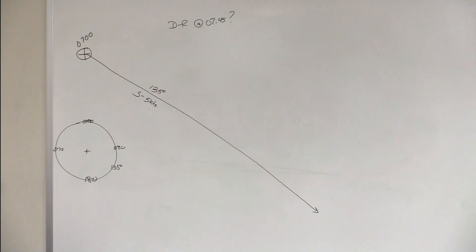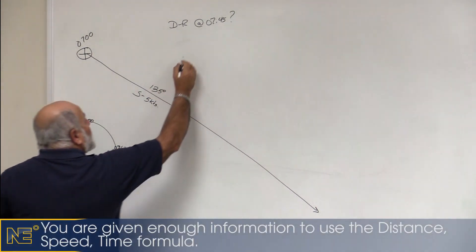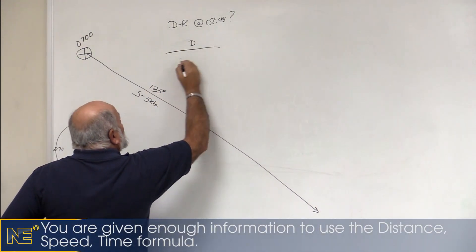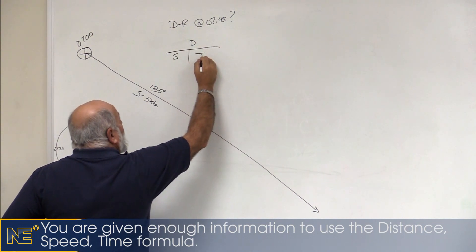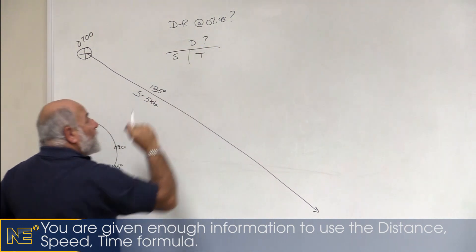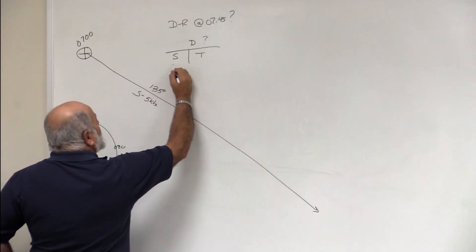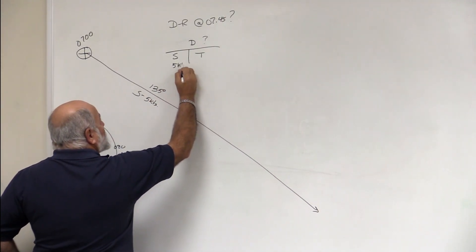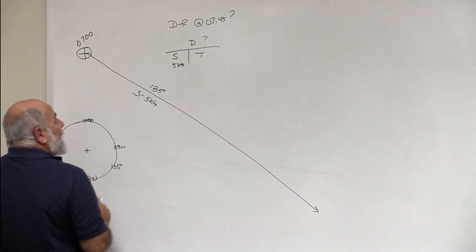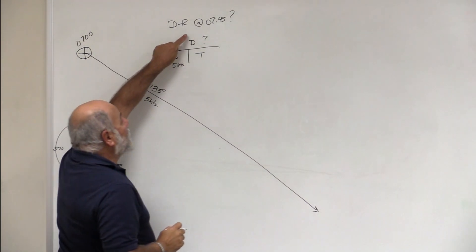We need to do a distance, speed, and time problem. So distance, speed, and time—we don't know how far we went. That's our unknown. We know what our speed is. What's our speed? Five knots. What's our time? Our time is 7:45.